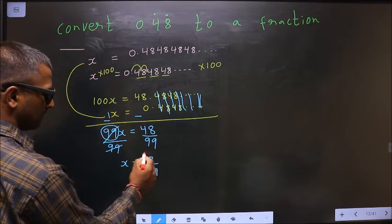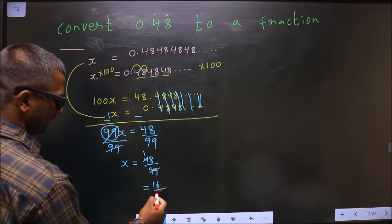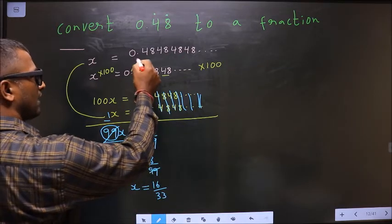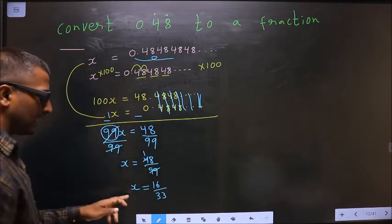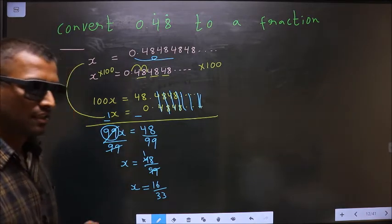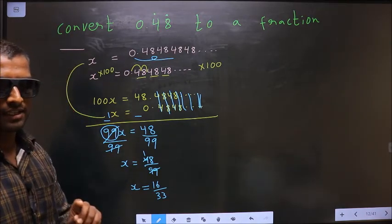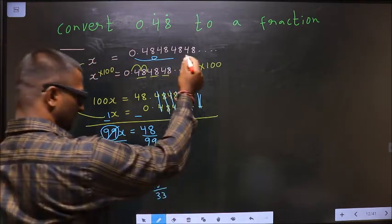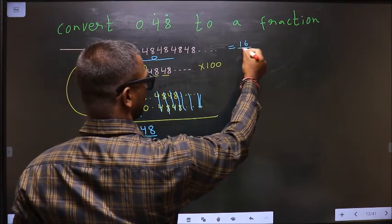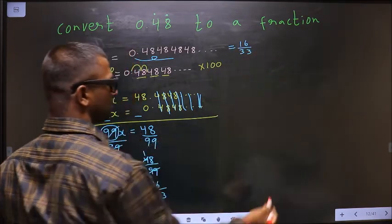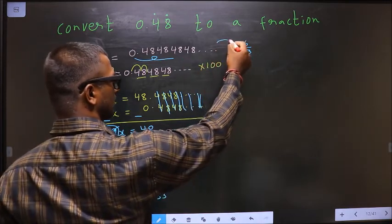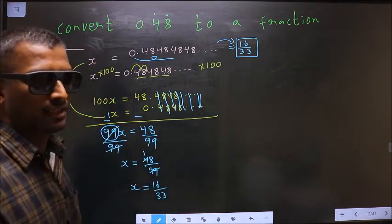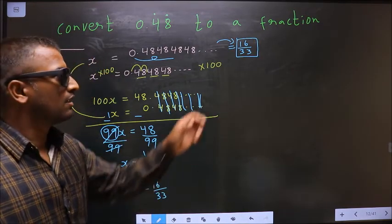Now see, we have taken this to be x, and here I got x equal to 16 by 33. That implies only one thing: these two are equal. So this equals 16 by 33. Thus I have converted this recurring decimal to fraction, and this is my answer.